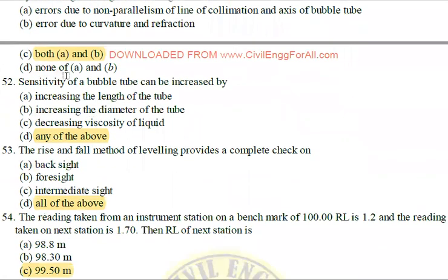Next: The sensitivity of the bubble tube can be increased by increasing the length and increasing the diameter — these are directly proportional — and by decreasing the viscosity, which is inversely proportional.